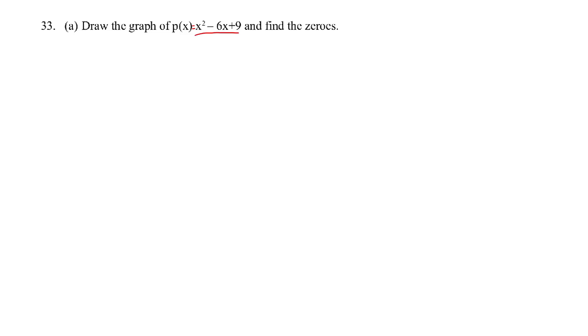Draw the graph of p(x) = x² - 6x + 9 and find the zeros. This is from the polynomials chapter. What we have here is a quadratic polynomial.